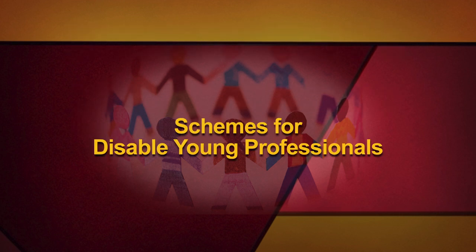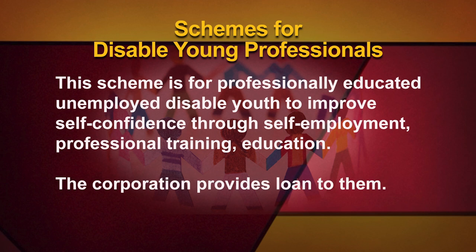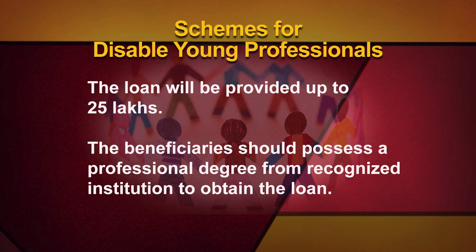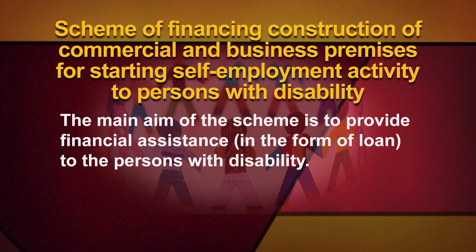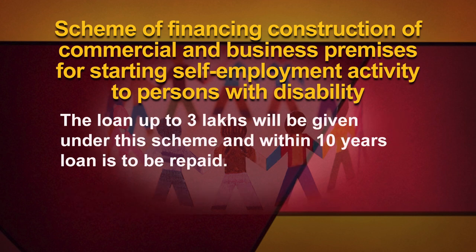Schemes for Disabled Young Professionals: this scheme is for professionally educated unemployed disabled youth to improve self-confidence through self-employment, professional training, and education. The loan will be provided up to 25 lakhs, and beneficiaries should possess a professional degree from a recognized institution. Scheme of Financing Construction of Commercial and Business Premises for Starting Self-Employment Activity to Persons with Disability: loan up to 3 lakhs will be given under the scheme and within 10 years the loan is to be repaid.